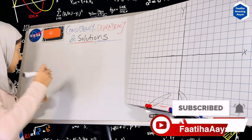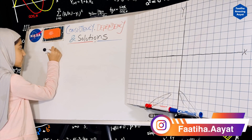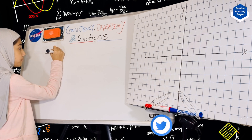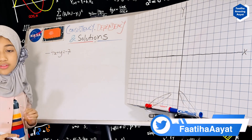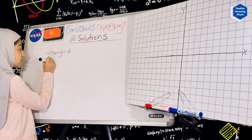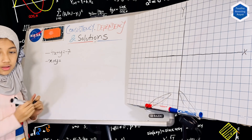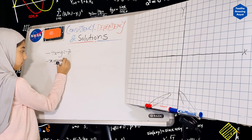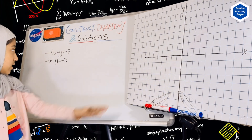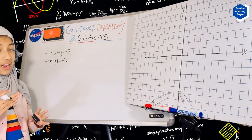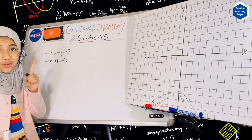So let's take our example. One of them is minus 4X plus Y is equal to minus 7. And another equation is minus X plus Y is equal to minus 3. So these are our two equations. Now let's simply graph them, but for that we need the Y-intercept form.